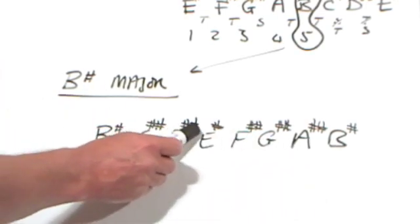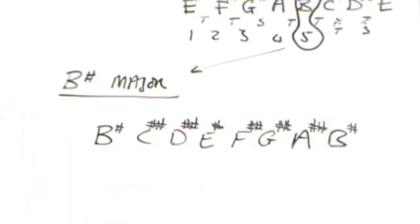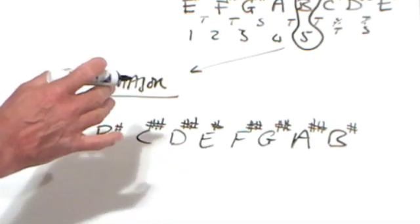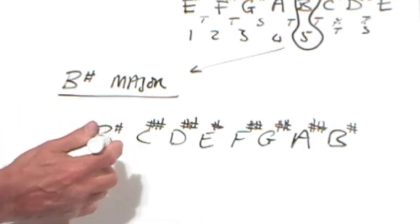So, 1, 2, 3, 4, 5, 6, 7, 8, 9, 10, 11, 12 sharps. It really is beginning to get ridiculous.